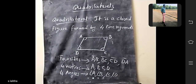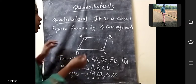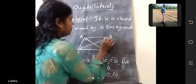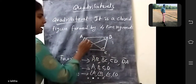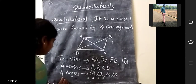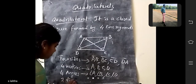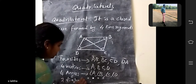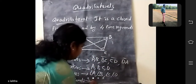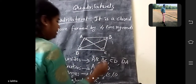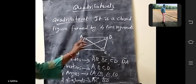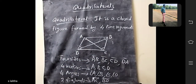If you join the opposite vertices like this, it will form diagonals. What do you call these lines? Diagonals. How many diagonals for a quadrilateral? 2 diagonals. What are those? AC and BD are the 2 diagonals.